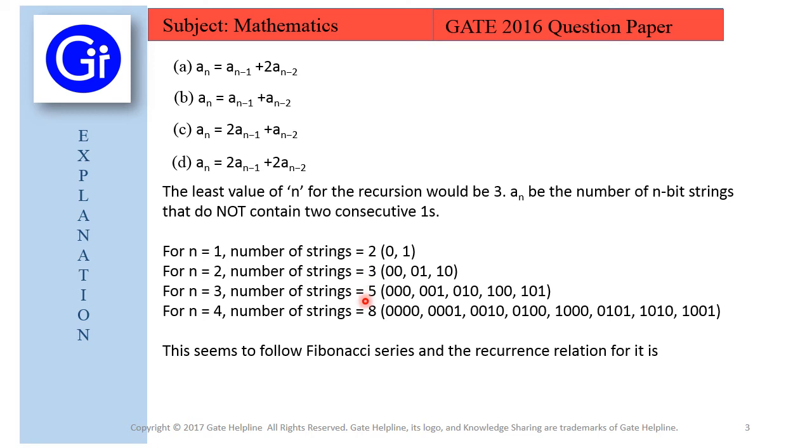Let's try one more example for n=4. The number of strings would be 0000, 0001, 0010, 0100, 0101, 1000, 1001, and 1010. In all these examples we don't have two consecutive ones. So the number of strings is 8.